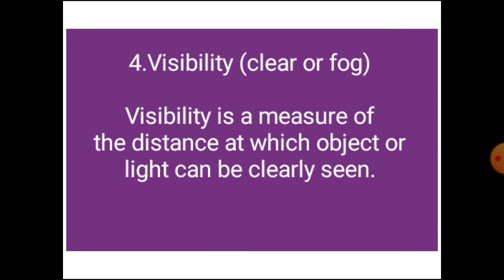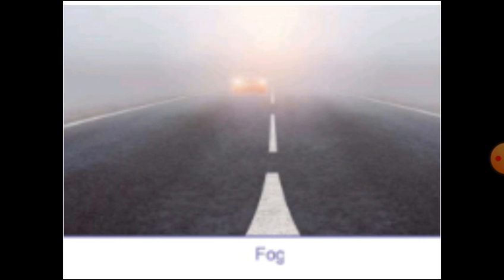Next is visibility. Visibility is a measure of distance at which an object or light can be seen clearly. Weather can be of two types based on visibility: clear or foggy. Several factors affect visibility, like fog. When water droplets are hanging in the air, we cannot see far. This is called fog.